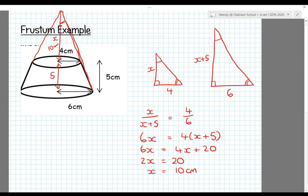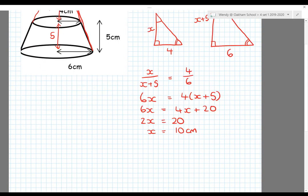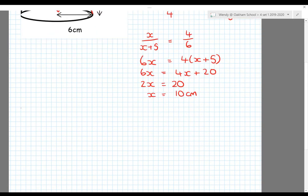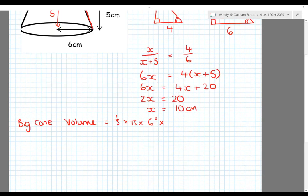To find the frustum volume, we take the big cone minus the little cone at the top. For the big cone volume: one-third times pi times r squared, which is 6 squared, times the height of the full cone, which is 15.